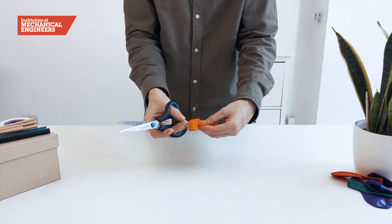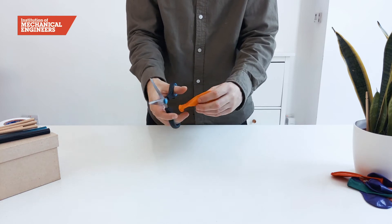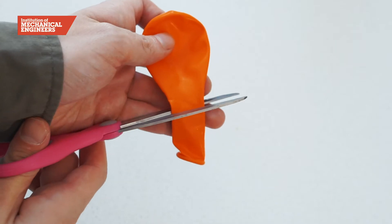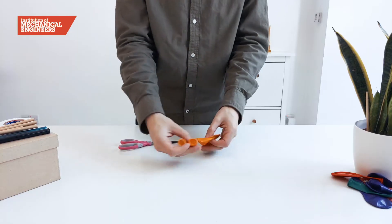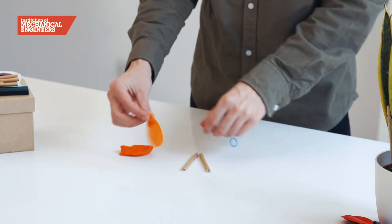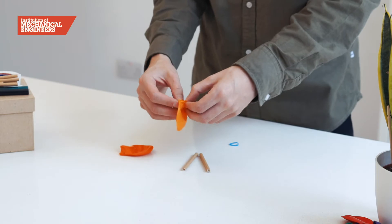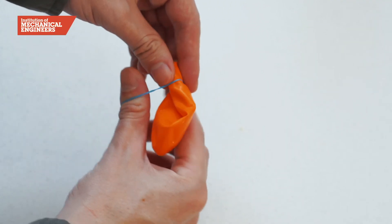Then cut the ends off two large balloons. We will put these to one side for now as they will be used in later stages of the build. Next we are going to connect the balloons to the ends of the straws using small elastic bands.